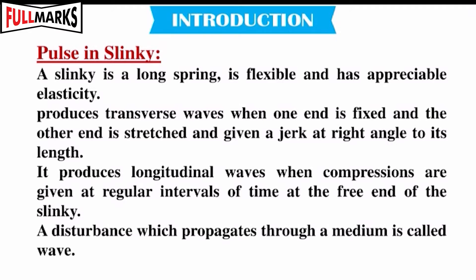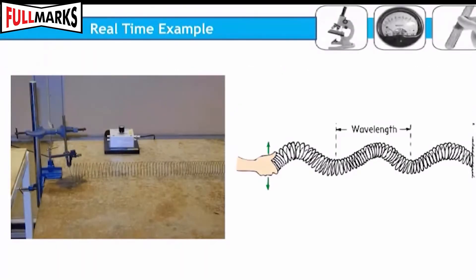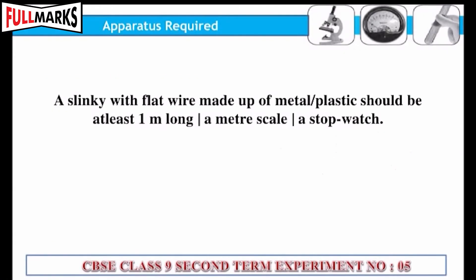A disturbance which propagates through a medium is called a wave. This experiment helps us study about the sound wave pulse and the calculation of speed, wavelength, and frequency of a sound wave. Apparatus required: a slinky with flat wire made up of metal or plastic, which should be at least 1 meter long, a meter scale, and a stopwatch.